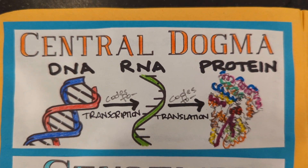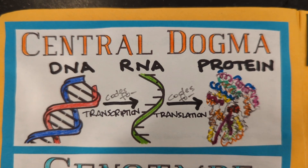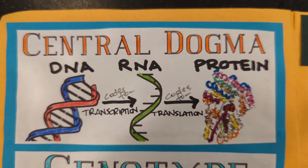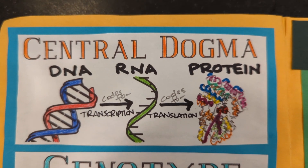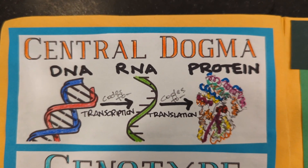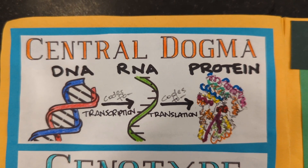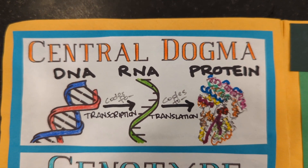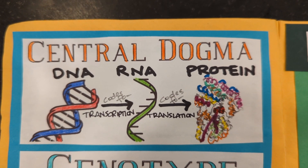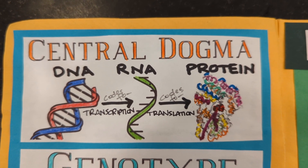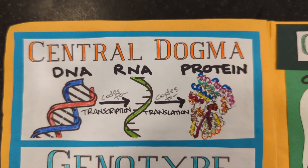We're going to talk about the central dogma of molecular biology, or the central dogma of DNA. While you're coloring in the words 'central dogma,' know that a dogma is basically an idea that is held to be true and is not controversial in any way. The dogma of molecular biology is summarized in the image below — the idea is that DNA codes for RNA.